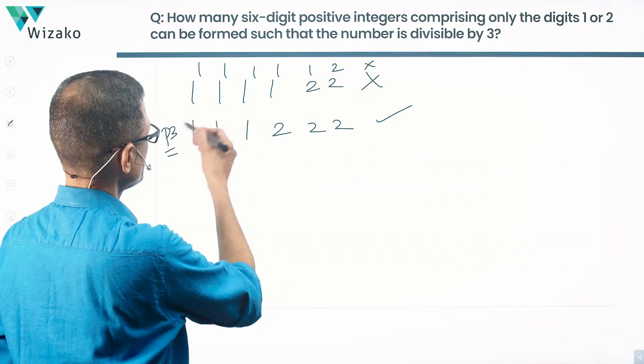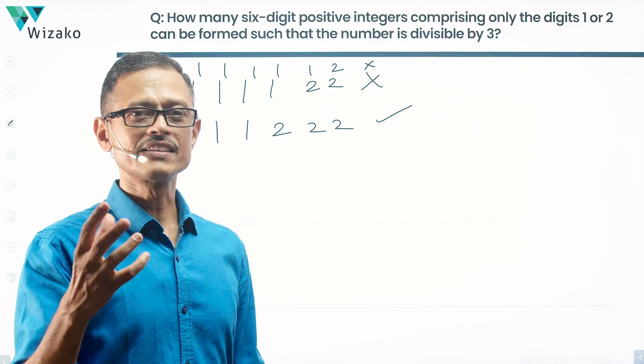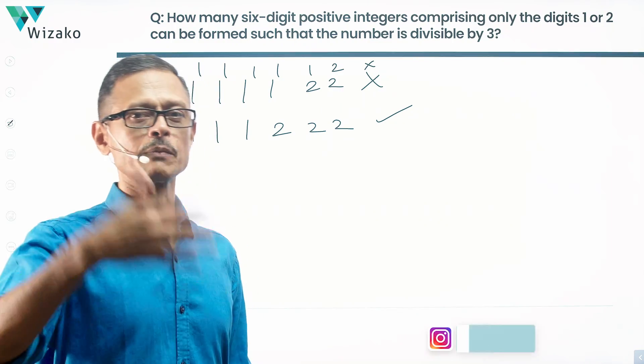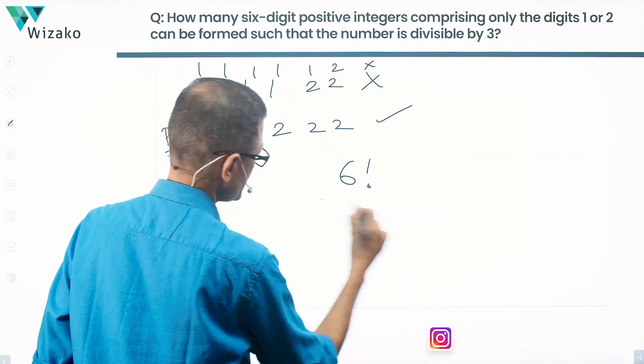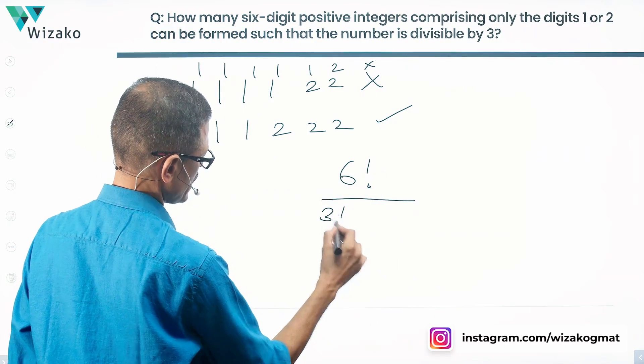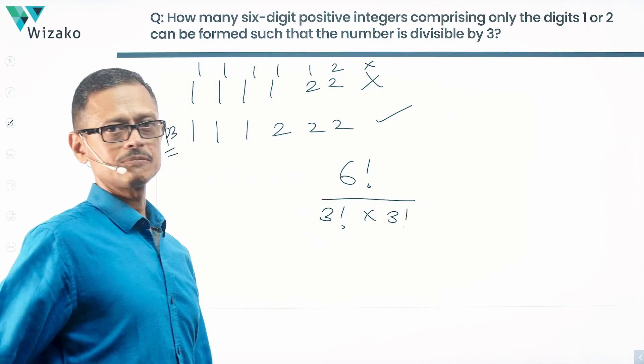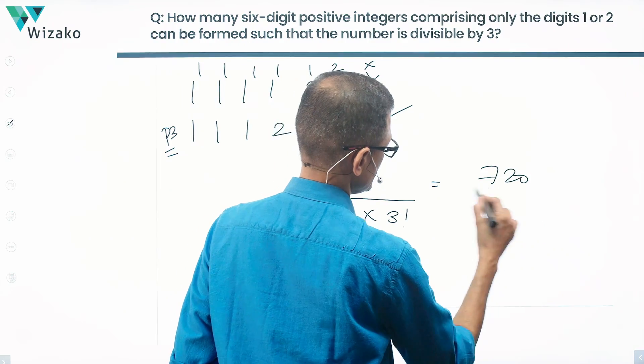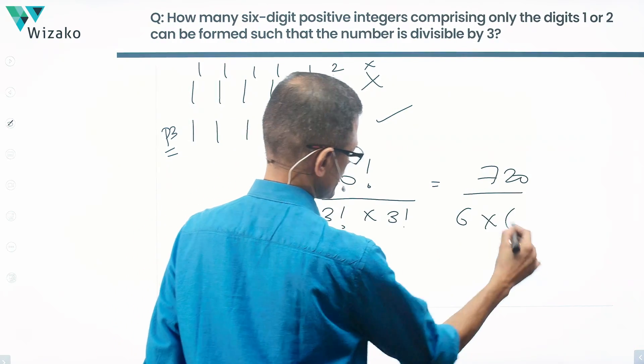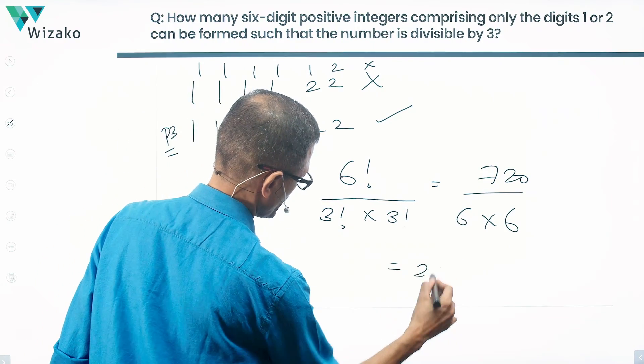How many different 6 digit positive integers can be formed by reordering the digits of triple 1, triple 2, including triple 1 and triple 2? Essentially we have a 6 digit number. So 6 factorial. 3 of these are 1s. So 3 factorial we'll have to divide it by. 3 of these are 2s. So let's divide it by 1 more 3 factorial. 6 factorial is 720. 3 factorial is 6 times 6. 720 divided by 36 that is equal to 20.